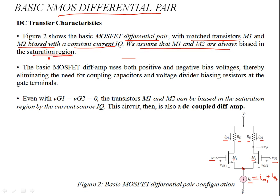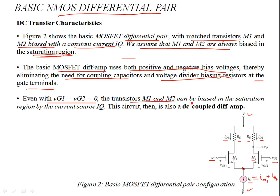Figure 2 shows the basic MOSFET differential pair with constant current IQ. We assume M1 and M2 are always biased in the saturation region, even without coupling capacitors or bypass resistors. The basic MOSFET differential amplifier uses both positive and negative bias voltages, but there is no need for coupling capacitors or voltage-divider biasing resistors at the gate terminals. This circuit is called a DC-coupled differential amplifier.